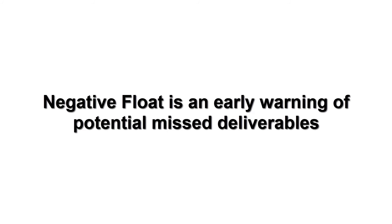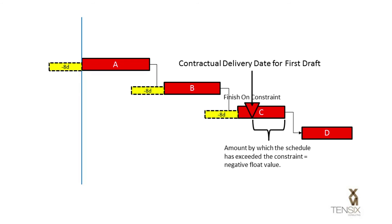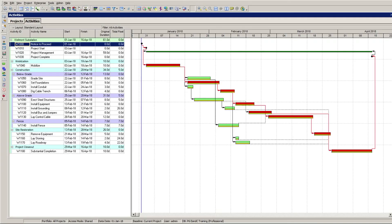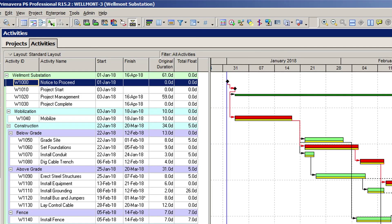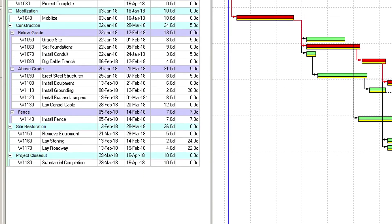However, from a scheduling best practice standpoint, it's important that you never have negative float appearing in your preliminary baseline. This would indicate that you are planning to miss an important deadline in your schedule before you have even started work. You are, in essence, planning to fail, and your schedule doesn't reflect a realistic approach to the project. Negative float should only occur in a schedule after the work has started and progress is being reported. So, if you are using constraints in your schedule, particularly hard constraints, you should check for negative float before baselining your plan.